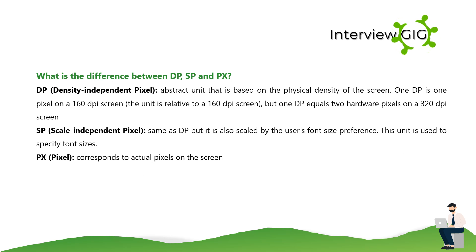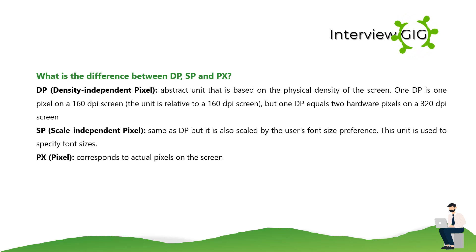What is the difference between DP, SP, and PX? DP (Density Independent Pixel) — an abstract unit based on the physical density of the screen; 1DP equals 1 pixel on a 160dpi screen, and 1DP equals 2 hardware pixels on a 320dpi screen. SP (Scale Independent Pixel) — same as DP but also scaled by the user's font size preference; used to specify font sizes. PX (Pixel) — corresponds to actual pixels on the screen.